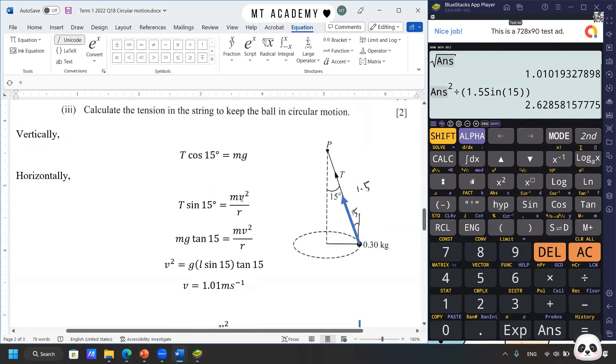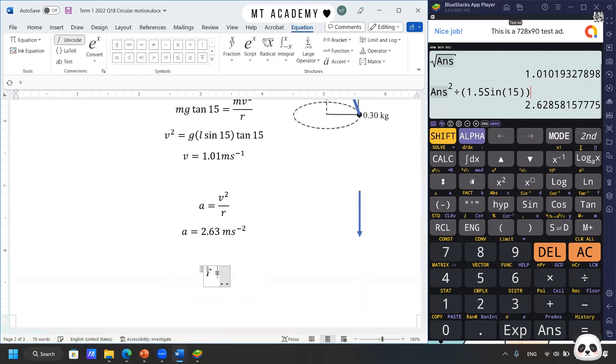And then the last one is about the tension. So you can use any of the formula. So you can use mv² over R, but maybe I'll just use T cos 15° equals to mg. That's the faster. Yeah, T equals mg over cos 15°.